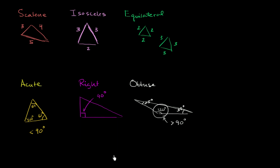Can a triangle be multiple of these things? Absolutely — you could have a right scalene triangle. In fact, a 3-4-5 triangle, which has sides of length 3, 4, and 5, is a right triangle, with a 90 degree angle. You could also have an equilateral acute triangle. In fact, all equilateral triangles are acute because all of their angles are exactly 60 degrees. So there are multiple combinations possible between these classifications.